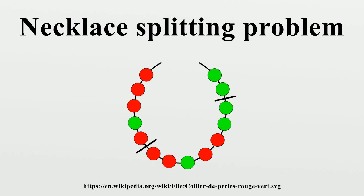Variant 2: Continuous splitting. The necklace is the real interval. Each point of the interval is colored in one of different colors. For every color, the set of points colored by it is Lebesgue measurable and has a given length, where a non-negative real number. Partition the interval into parts such that in each part, the total length of each color is exactly the required amount, using at most cuts.